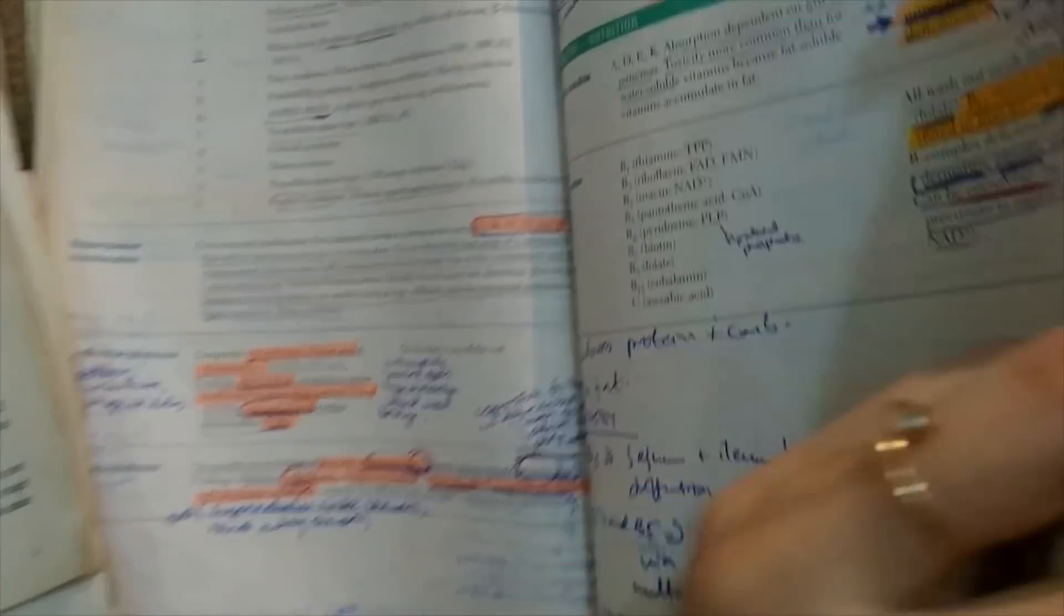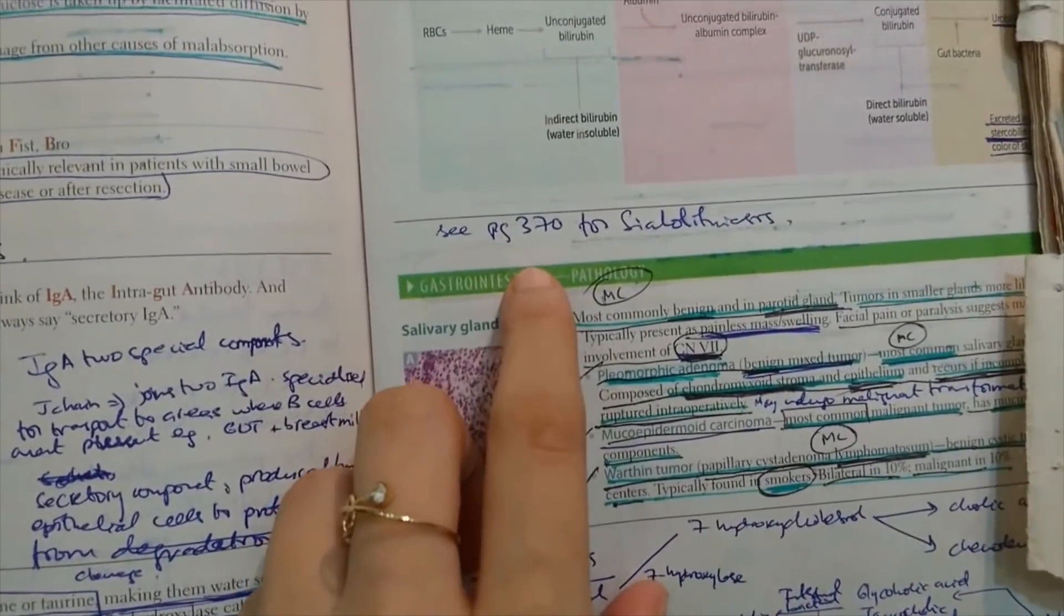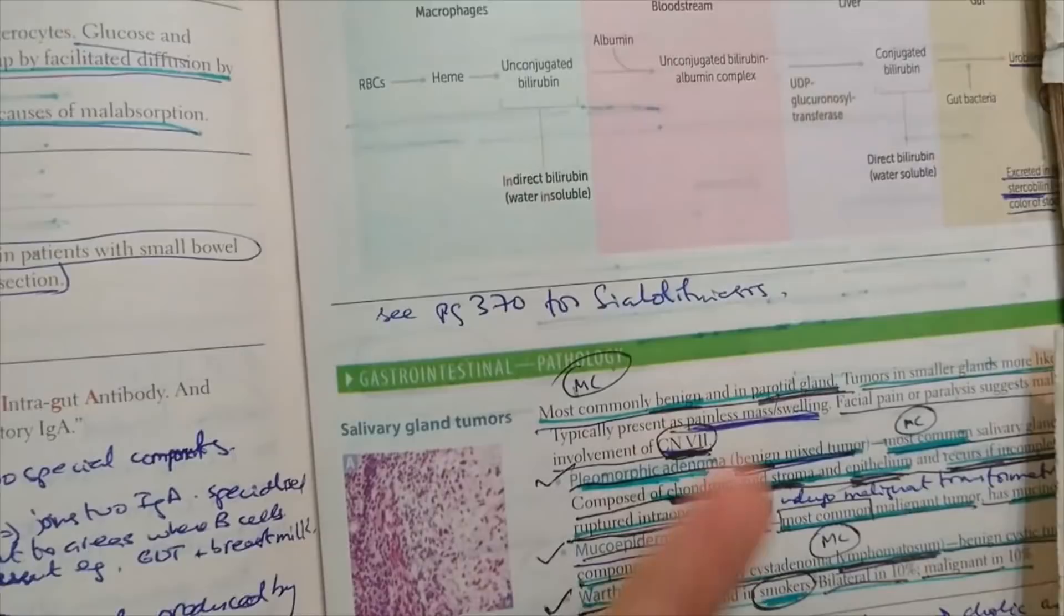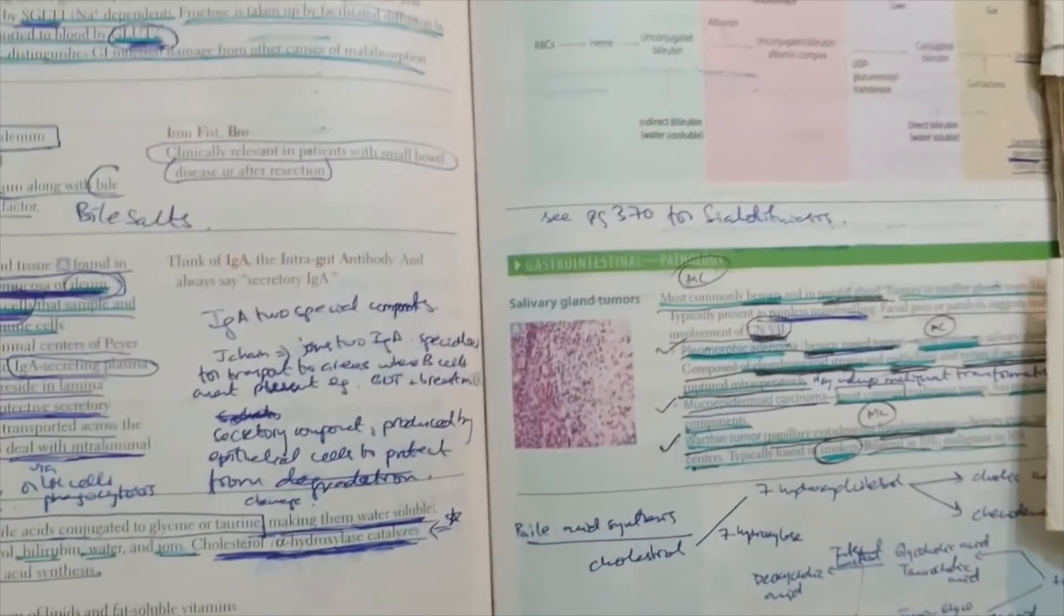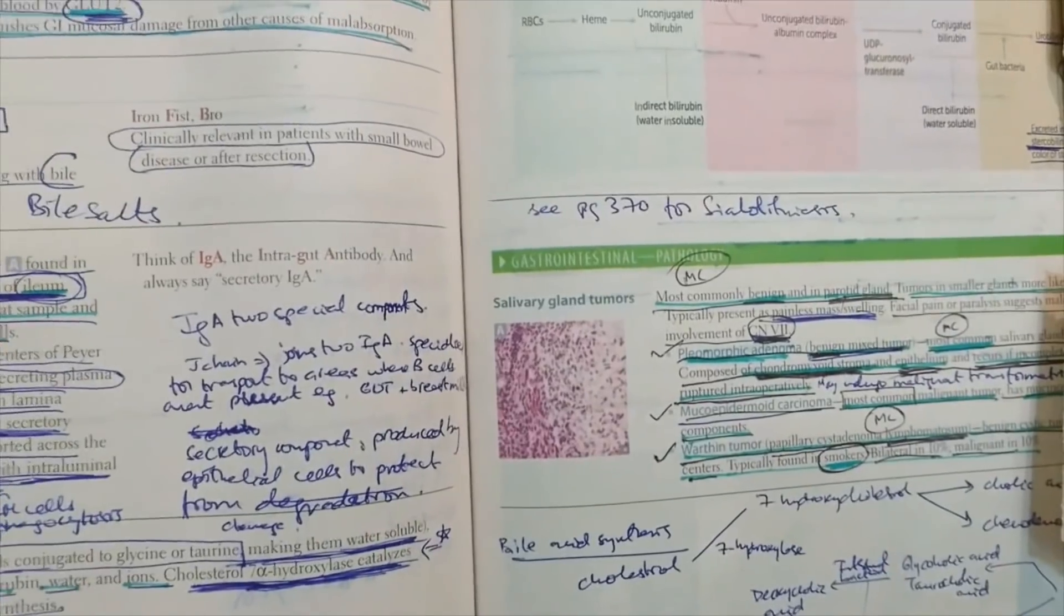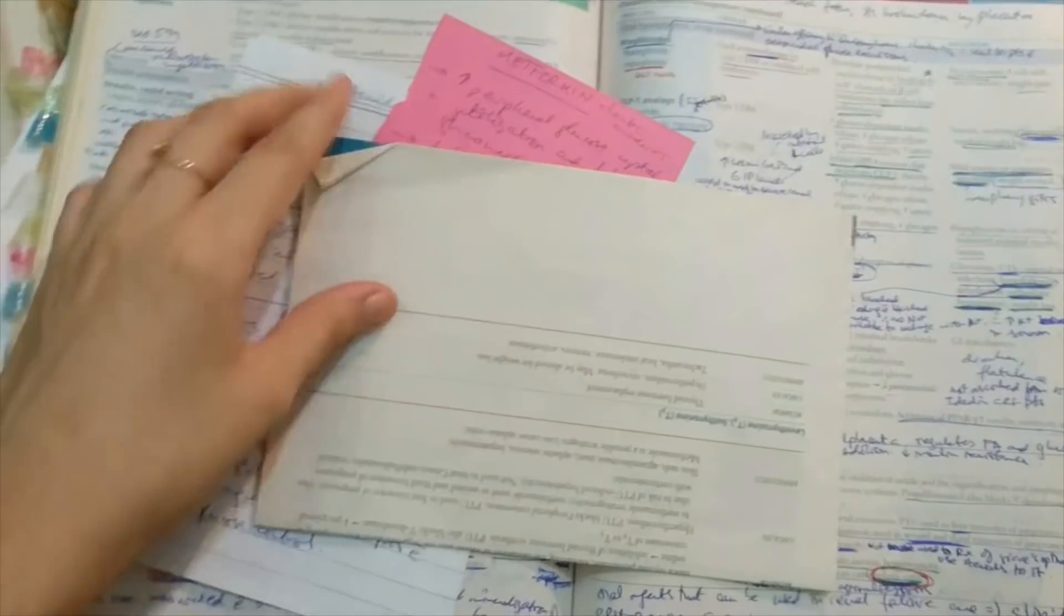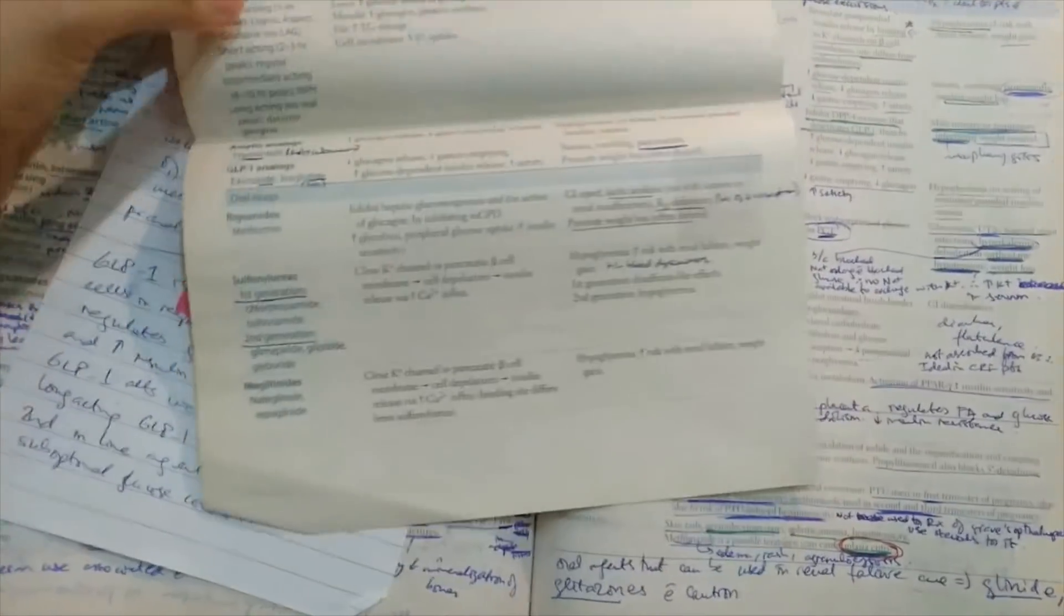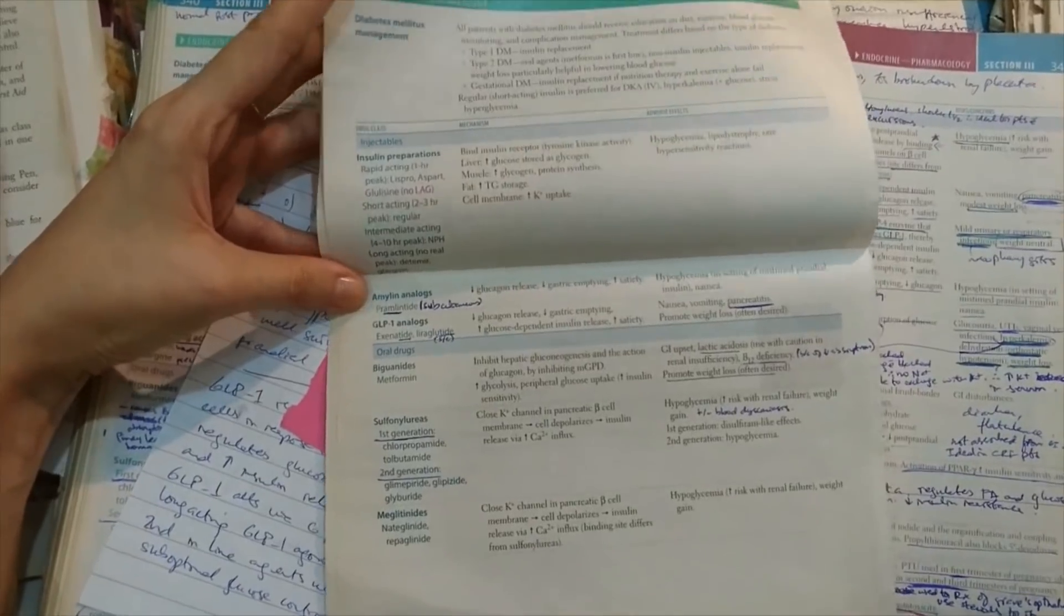Then there would be some things that would be too big to write down and I didn't want to waste any time and I was a bit lazy too. So I would just write see page 370 for Seattle criteria or whatever. And sometimes what I would do is that for example if there is too much information for me to write a reference from, I would just tear up the page from FA 18 and fold it up and just keep it in my FA 17 so that I can have a look at it later.